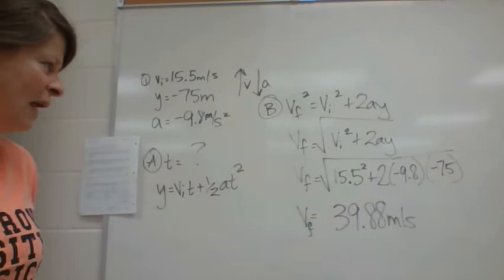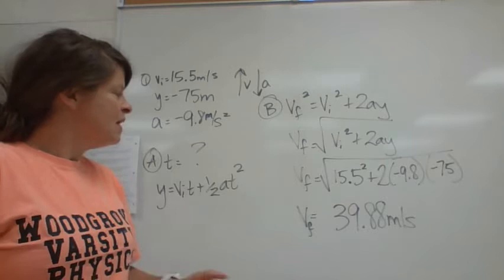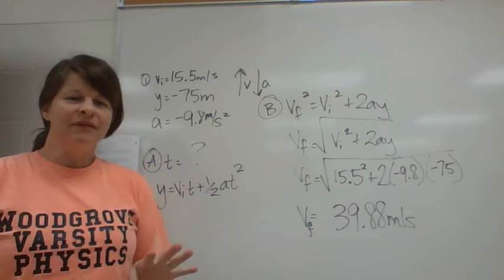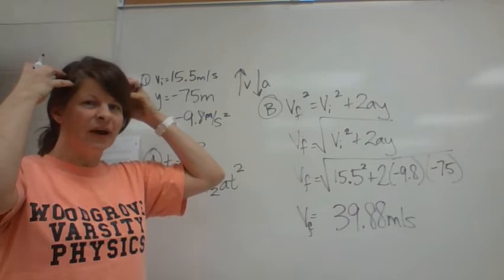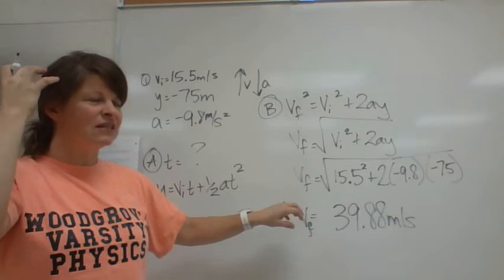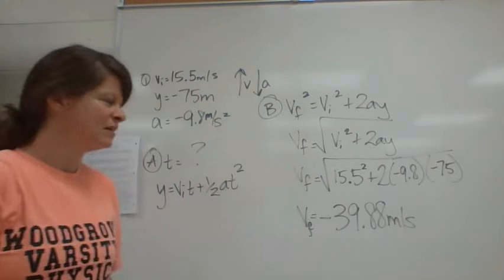So 39.88, but we're not done with part B. If you think back, when you take the square root, how many different root options do you have? Two. And so what are those two root options, positive or negative? So you now have to, this is where you could lose two points. You have to think about this and say, what direction is it heading right before it hits the ground? Negative. So I'm going to assign the negative based on the fact that when we take the square root, there's two root options. So that's actually part B.